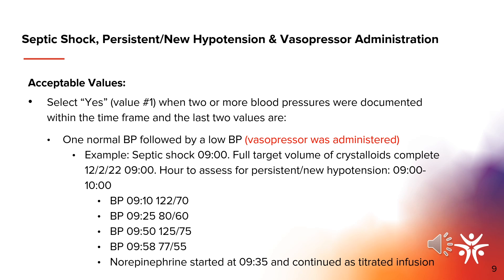Let's review additional guidance related to selecting value one — yes — for persistent or new hypotension present. If two or more blood pressures are documented, refer to the last two consecutive blood pressures within the hour. Select value one if there is a low blood pressure followed by another low blood pressure. Select value one — yes — if there is a normal blood pressure followed by a low blood pressure and a vasopressor was administered. In this example, the last two blood pressures include one normal and one hypotensive reading. Persistent or new hypotension is met at 9:58. In addition, a vasopressor was administered within the acceptable time frame, defined in the specifications manual as at the onset through six hours following the onset of septic shock.